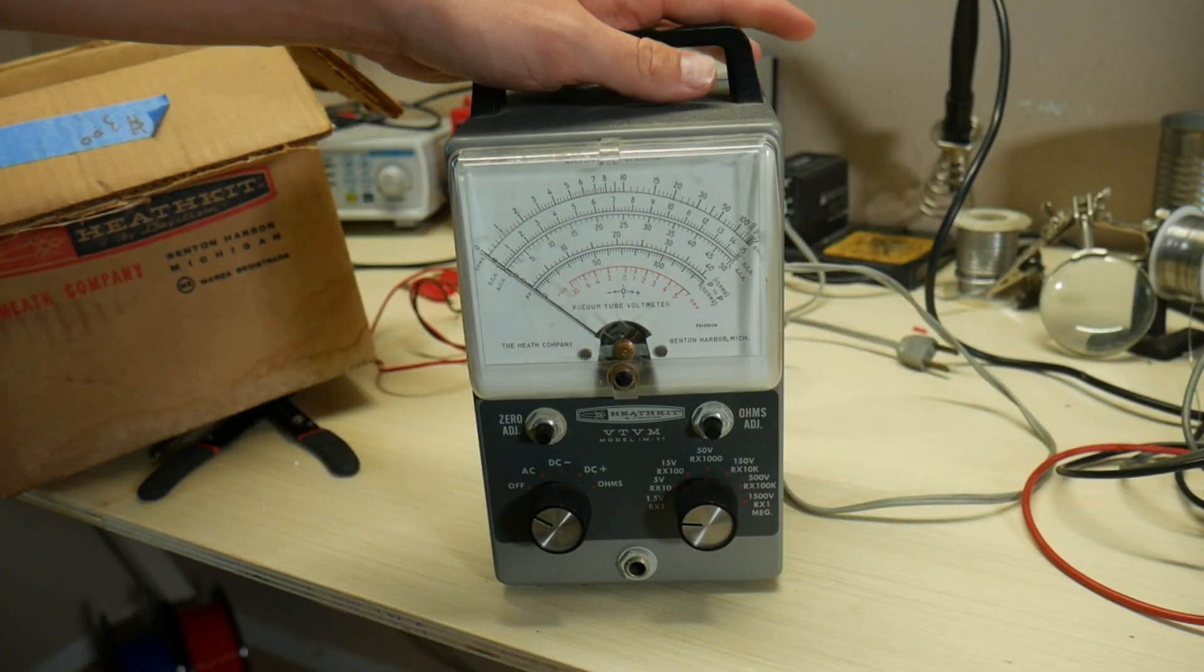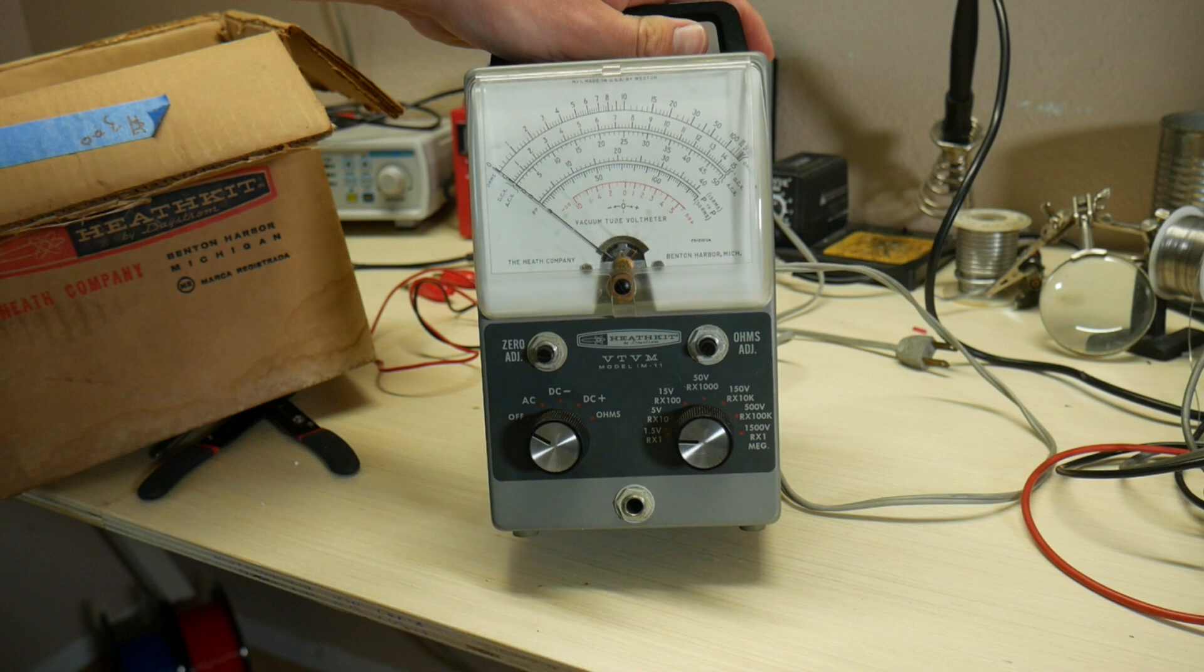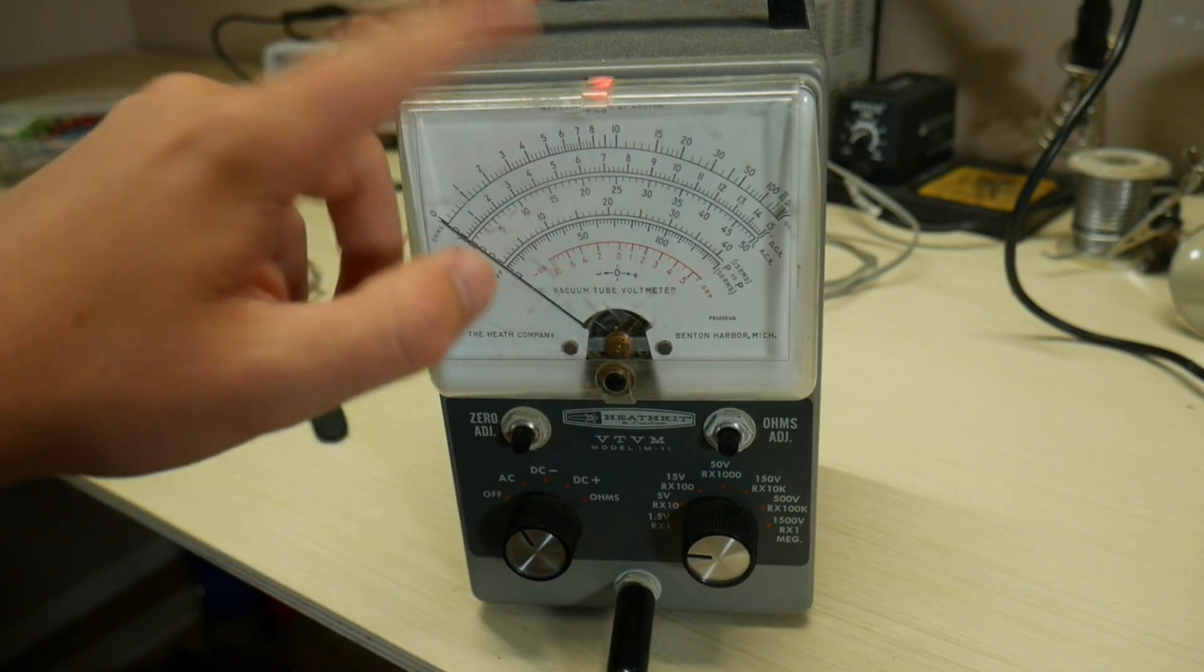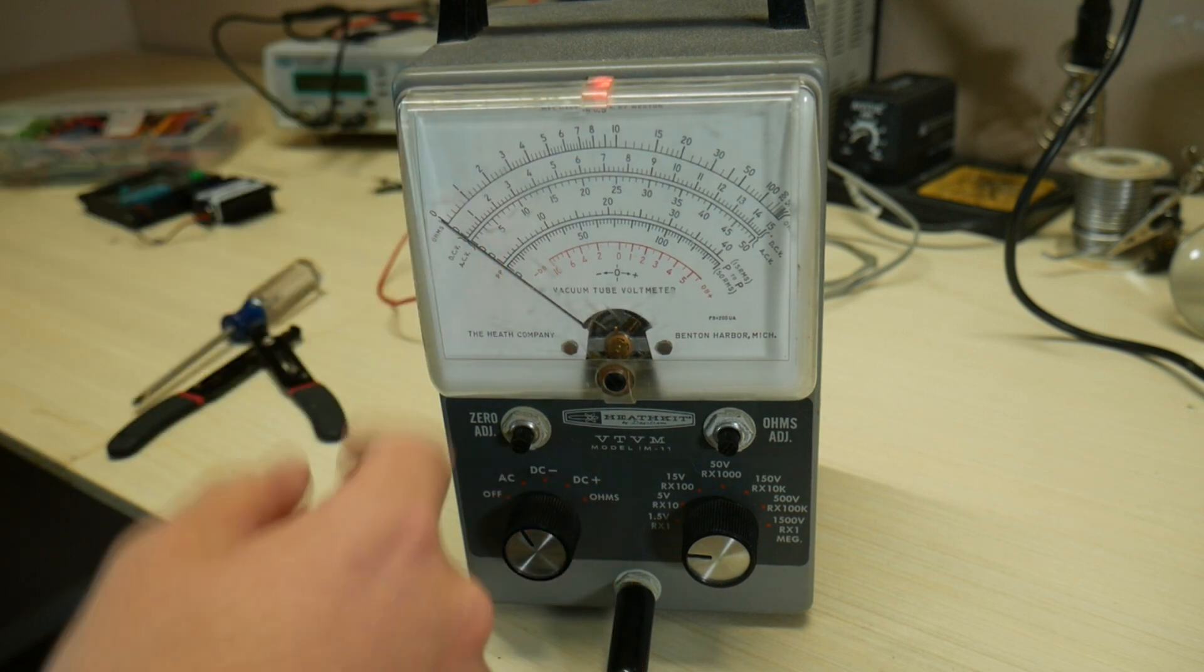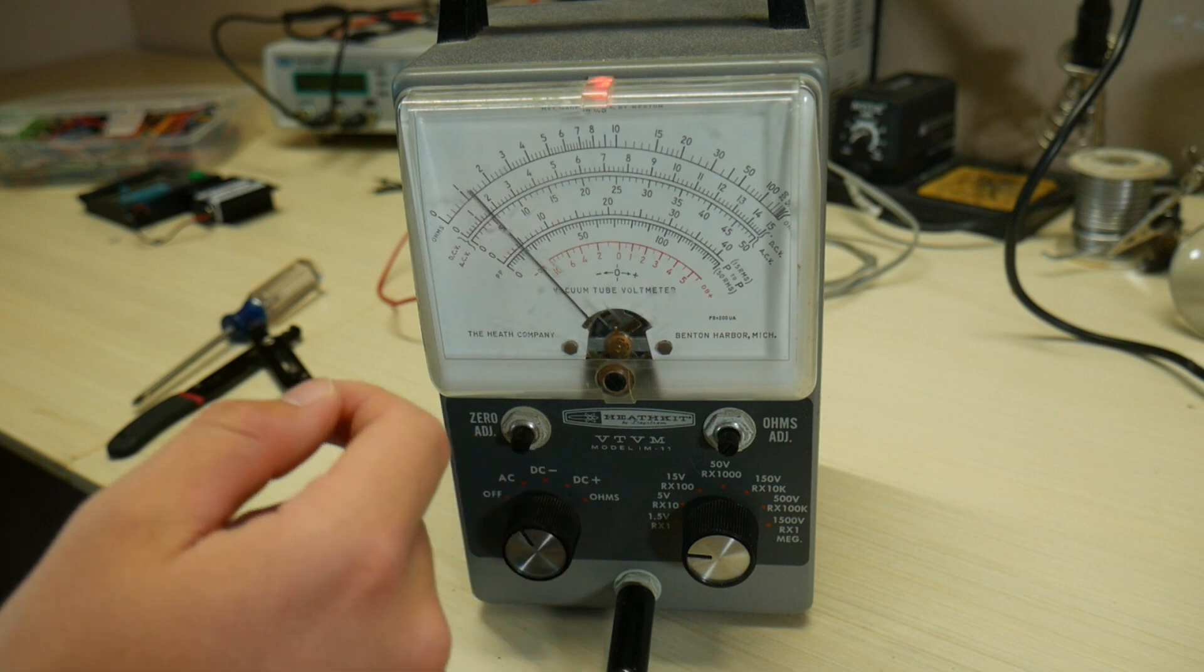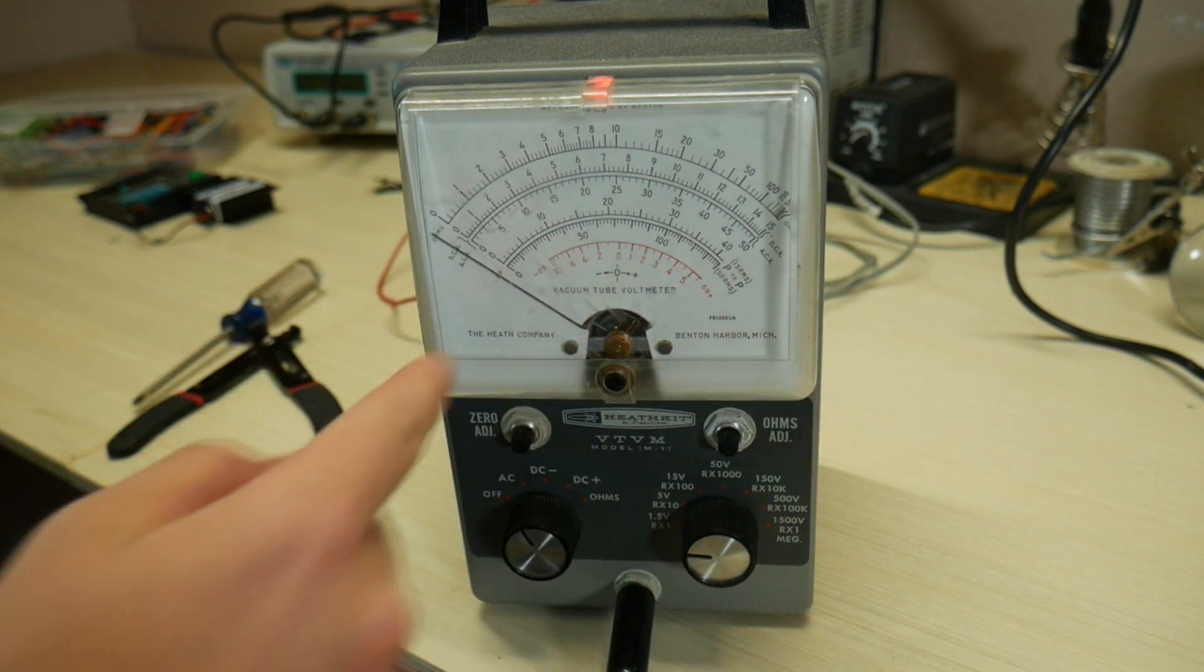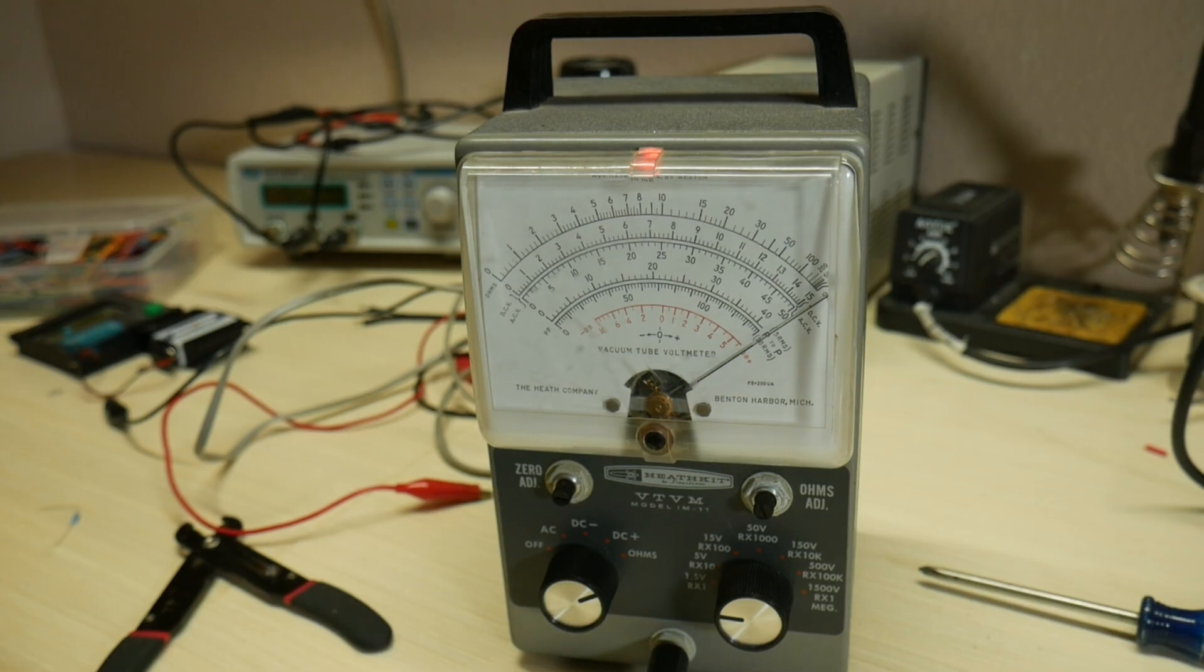Now if we take a look at the voltmeter itself, it looks to be in great condition. So let's plug it in and see how well it works. When I turn it on, you can see that this little light on the top starts glowing. And as you can see now, nothing's happening to the needle until now. Just went to the start and then back down. I guess that is a sign that the tubes are almost fully warmed up.